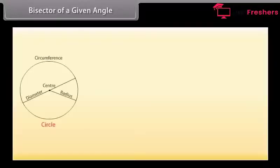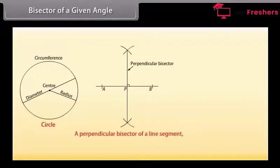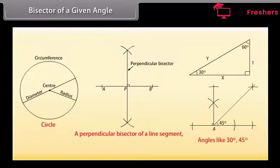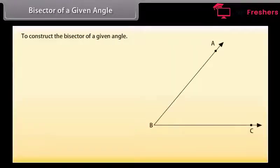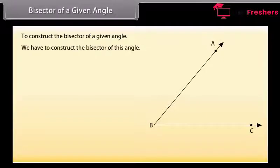Bisector of a given angle. Friends, we know how to construct a circle, a perpendicular bisector of a line segment, angles like 30 degree and 45 degree. Now we will learn to construct the bisector of a given angle. Let us take an angle ABC. We have to construct the bisector of this angle.